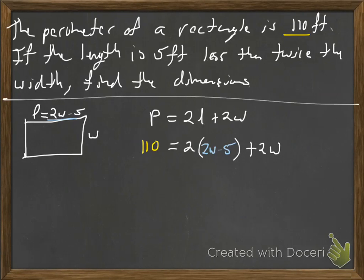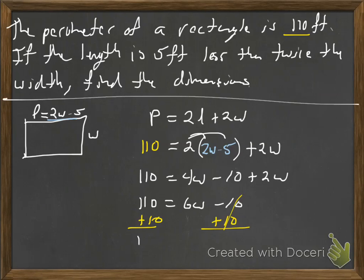We're going to go ahead and do the distributive property. So 110 equals 4W minus 10 plus 2W. Combining our like terms, we have 6W minus 10. Adding 10 to both sides. 120 equals 6W. So dividing both sides by 6, W will be equal to 20.